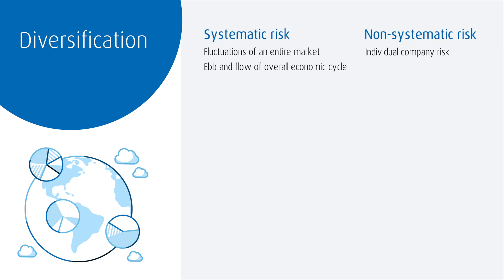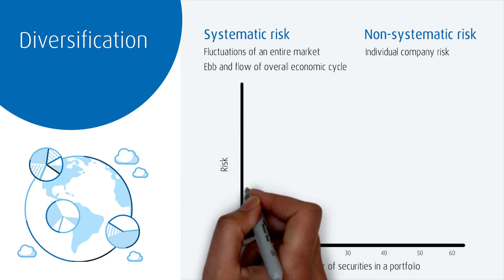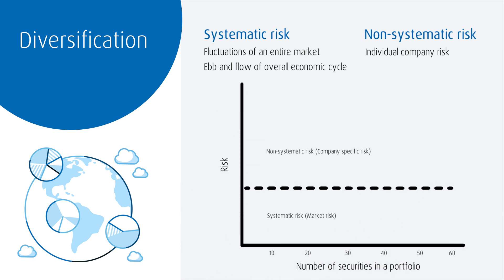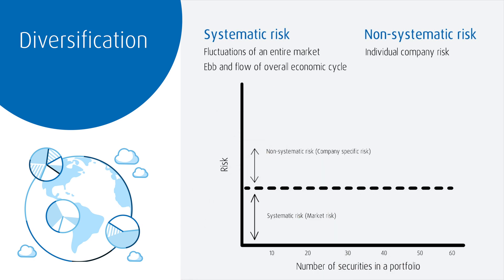Whether an economy is strong or going through a bad recession, individual companies' performance can differ from the pack. For example, a company that has made some bad decisions over time could still go bankrupt in a strong bull market.